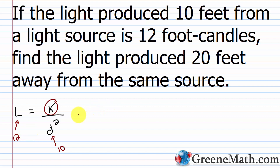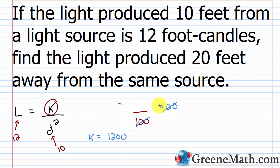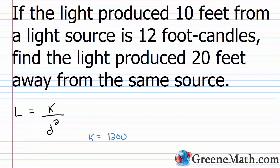Plugging in 12 for L and 10 for D: 12 equals k over 10 squared, which is k over 100. Multiply both sides by 100 and k equals 1200. Now let me erase this and set up the second scenario they need us to figure out.